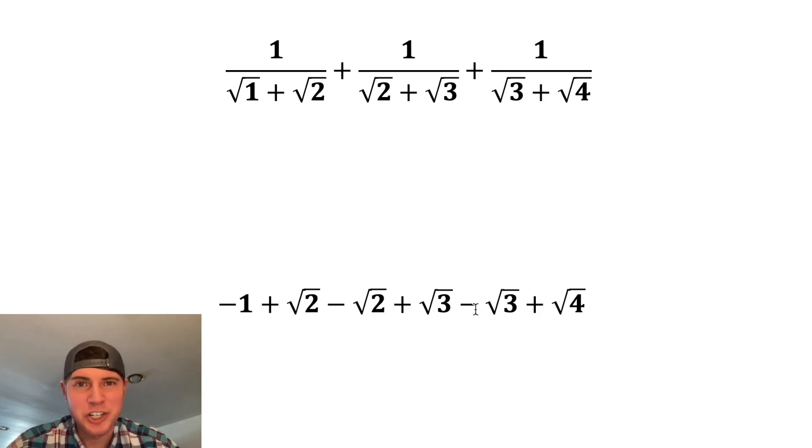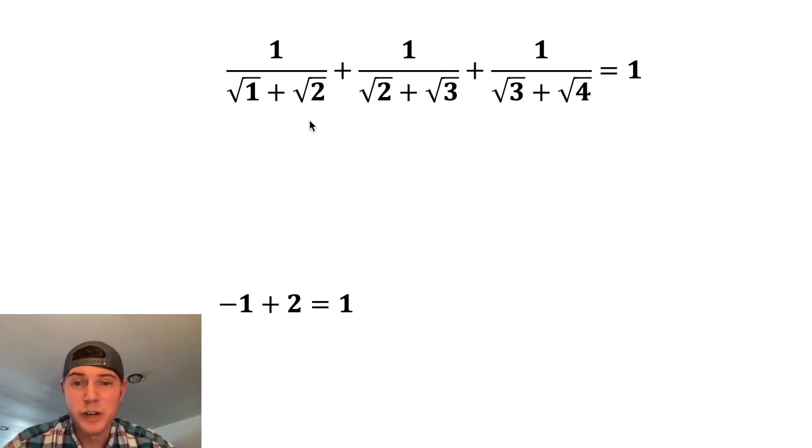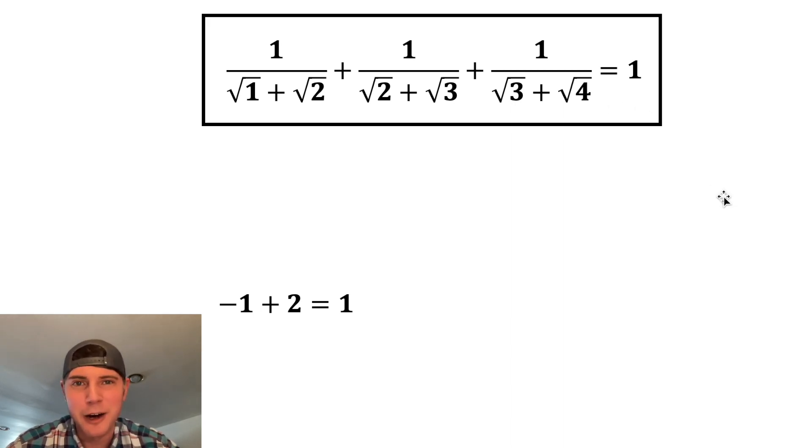So now we have this expression right here. This positive root 2 and negative root 2 can cancel each other out. And this positive root 3 and negative root 3 can also cancel each other out. And the square root of 4 is equal to 2. Let's bring this down here. Negative 1 plus 2 is equal to positive 1. That means that this original crazy expression is equal to 1. Now we can put a box around it. How exciting.